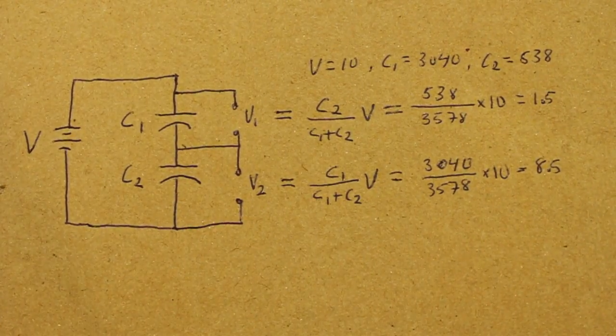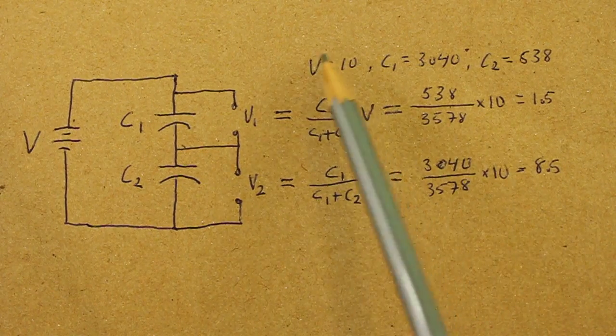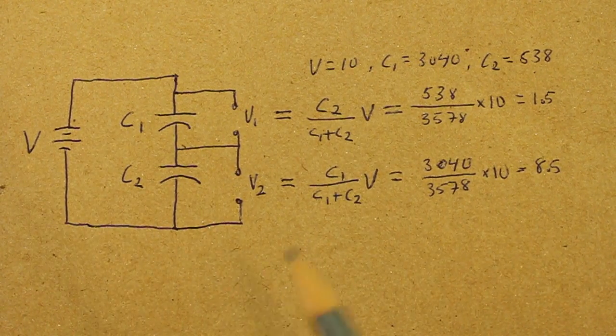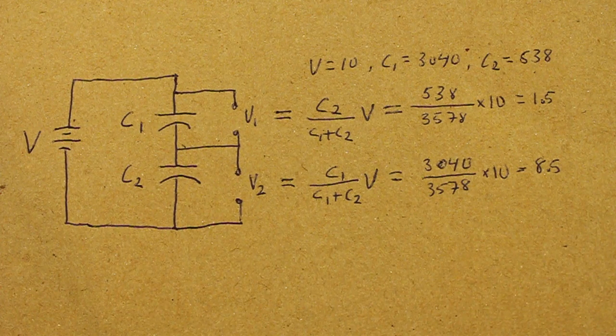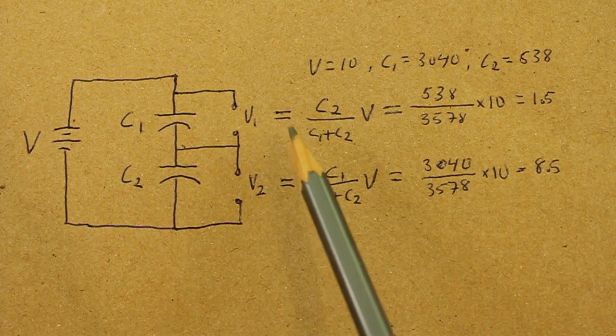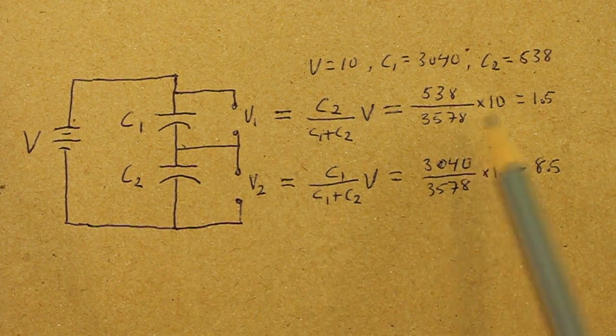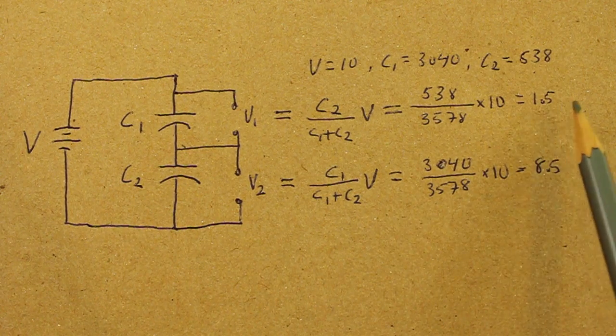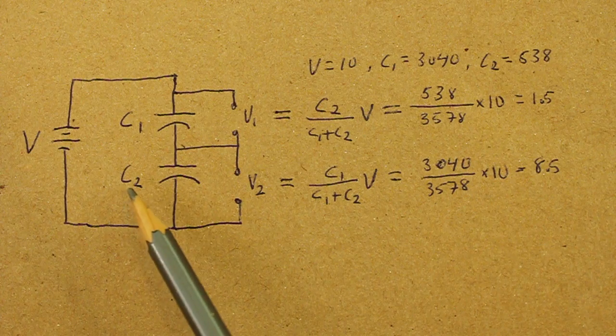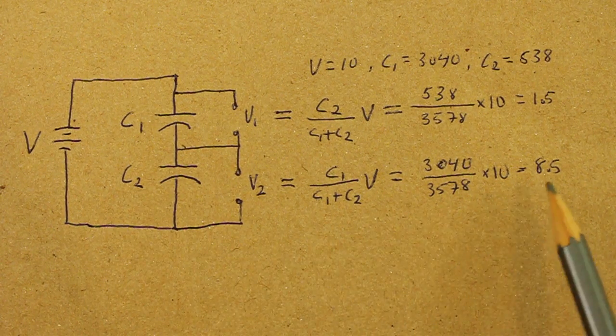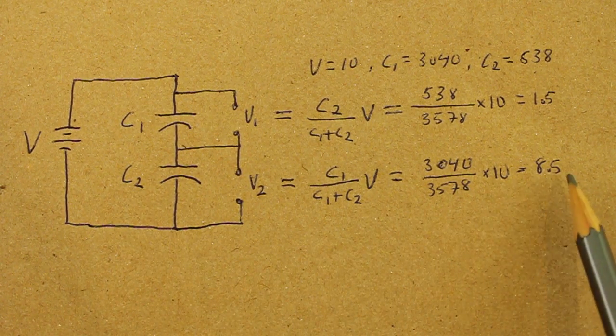Let's make the calculations using an input voltage of 10 volts and the values of capacitance that we measured. So, using the formula for V1, we obtain 1.5 volts at capacitor 1. And for the voltage at capacitor 2, we obtain 8.5 volts.